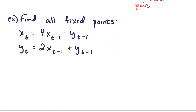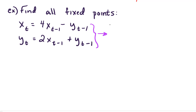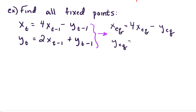Let's find all fixed points for the following system. The first thing I need to do is replace my x variables with x_eq and the y variables with y_eq. After we do that, on the left-hand side for our first equation, we get x_eq equals 4x_eq minus y_eq. And in the second equation, we get y_eq equals 2x_eq plus y_eq.